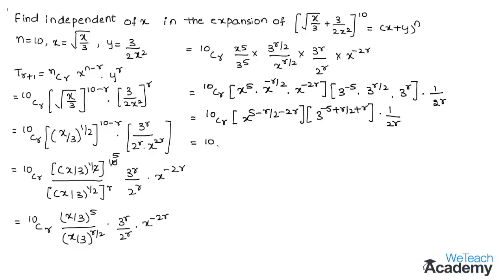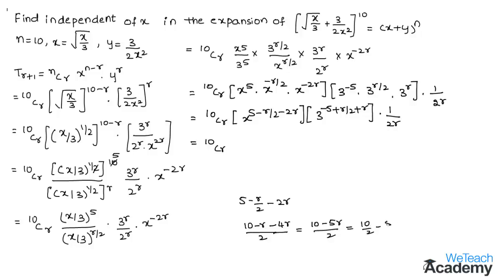Now let us simplify the power of x: 5 − r/2 − 2r. Taking LCM as 2, the numerator becomes 10 − r − 4r = 10 − 5r, giving x^((10 − 5r)/2), which simplifies to x^(5 − 5r/2).